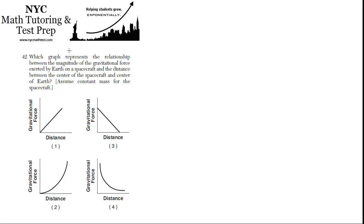42, which graph represents the relationship between the magnitude of the gravitational force exerted by Earth on a spacecraft and the distance between the center of the spacecraft and the center of the Earth? Assume constant mass for the spacecraft.